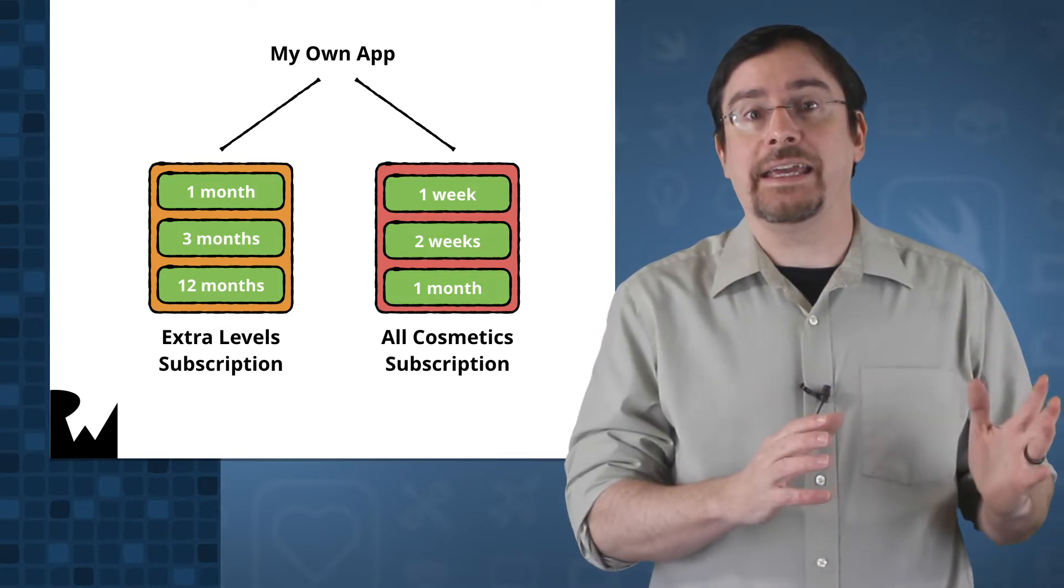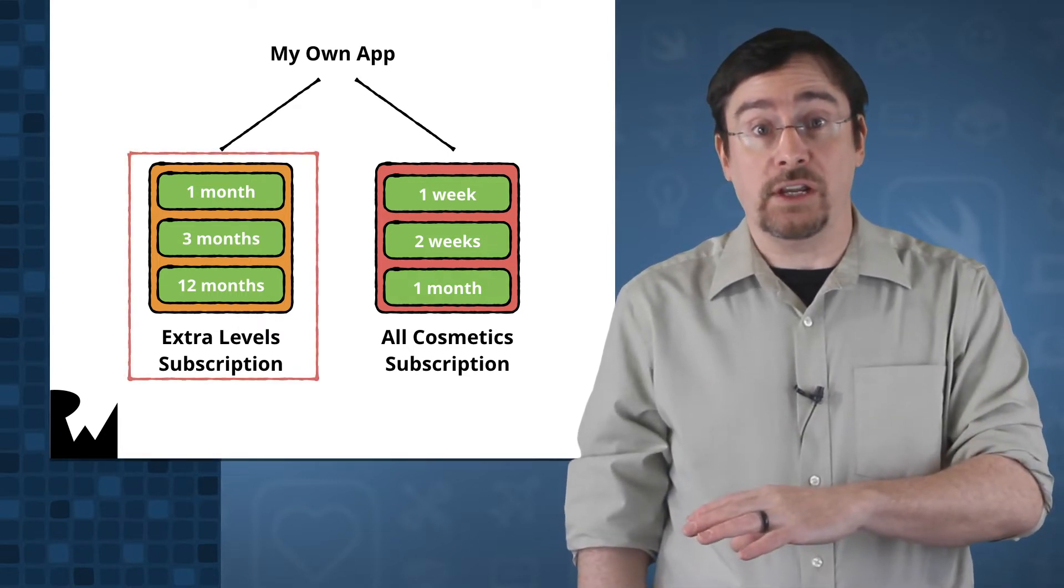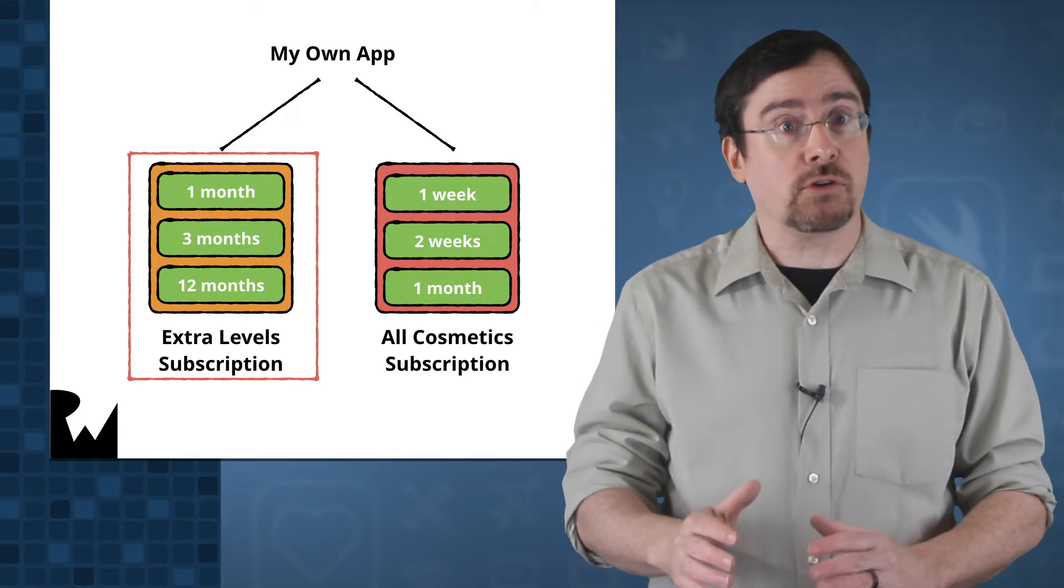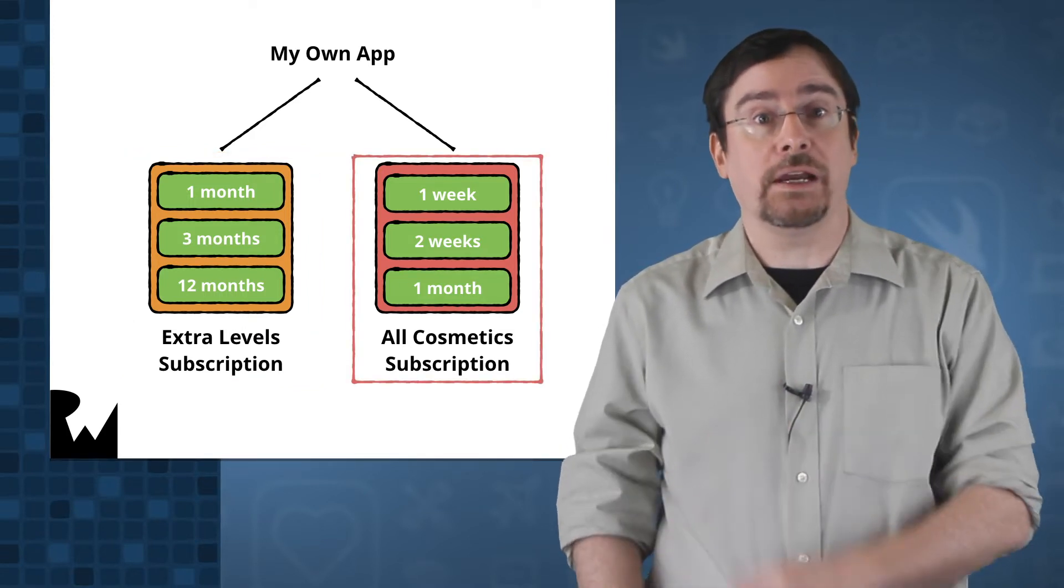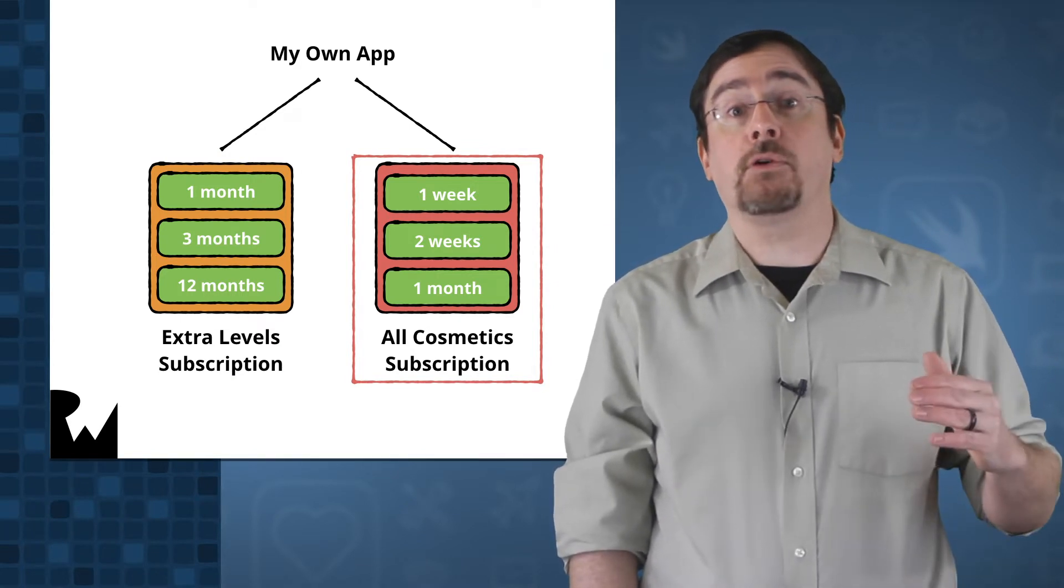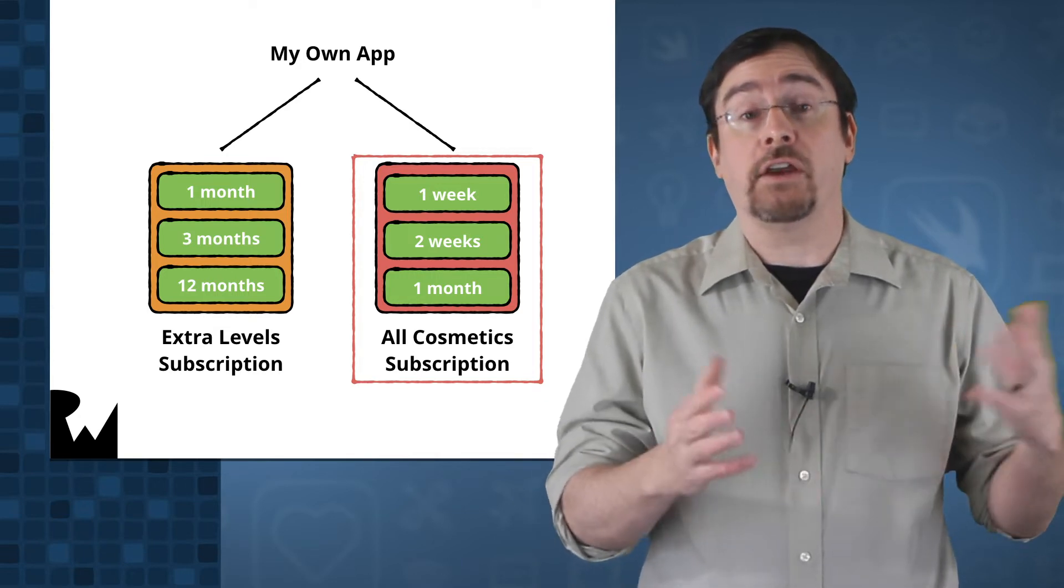For example, let's say I have a game, and I may have a subscription where the user gets new levels each month based on a subscription price. I may have another subscription where I provide weekly cosmetics as well. By housing them in different groups, users can upgrade and downgrade one subscription from another without affecting the other.